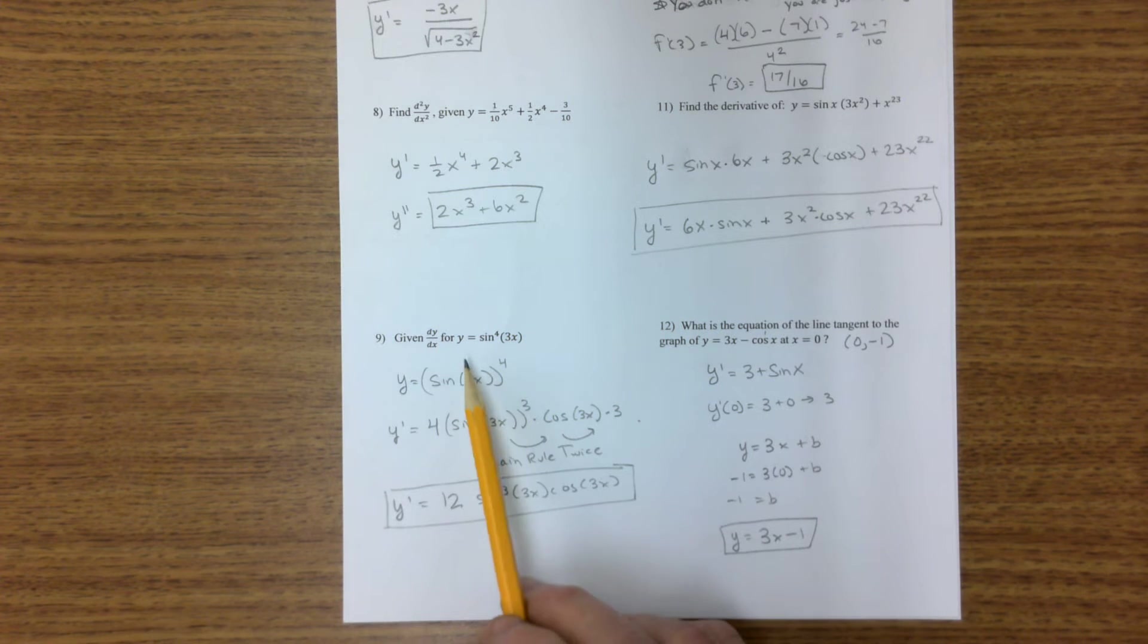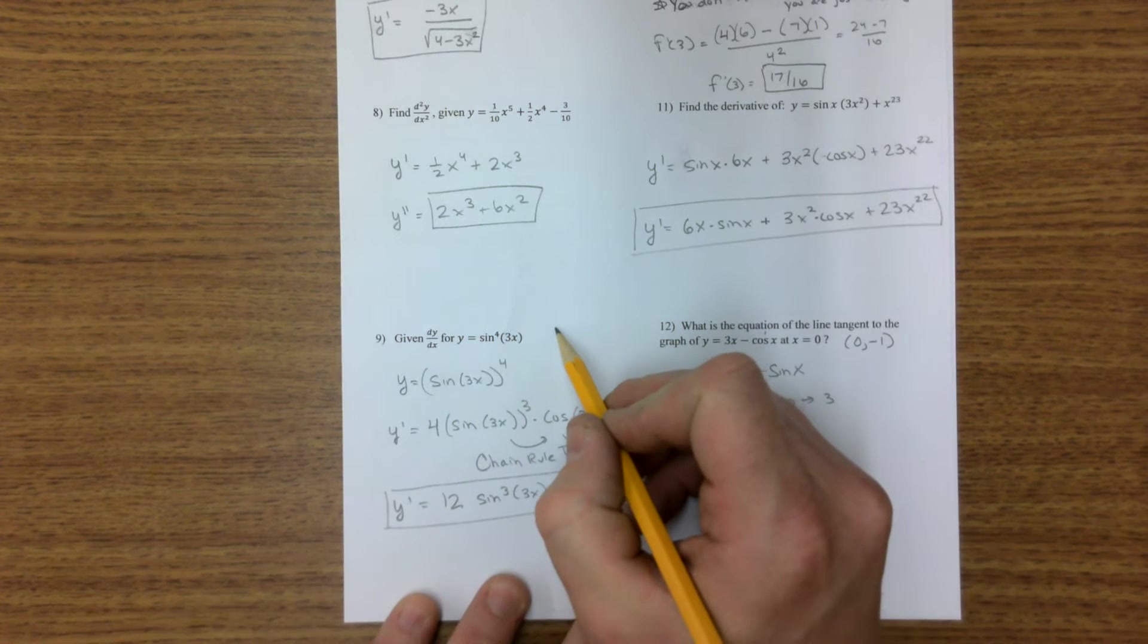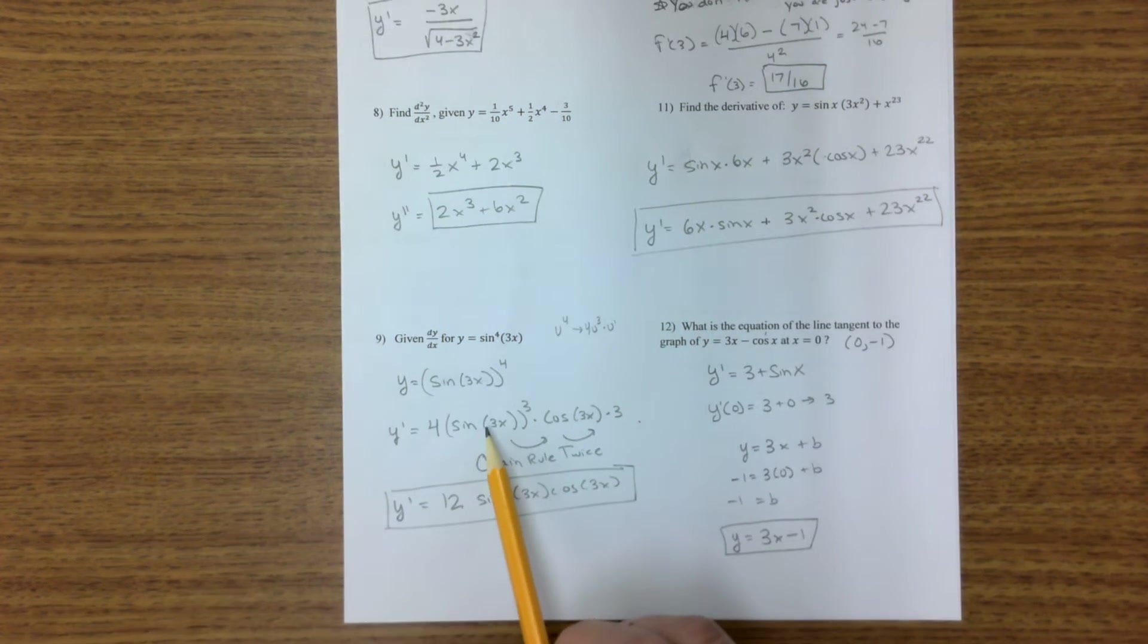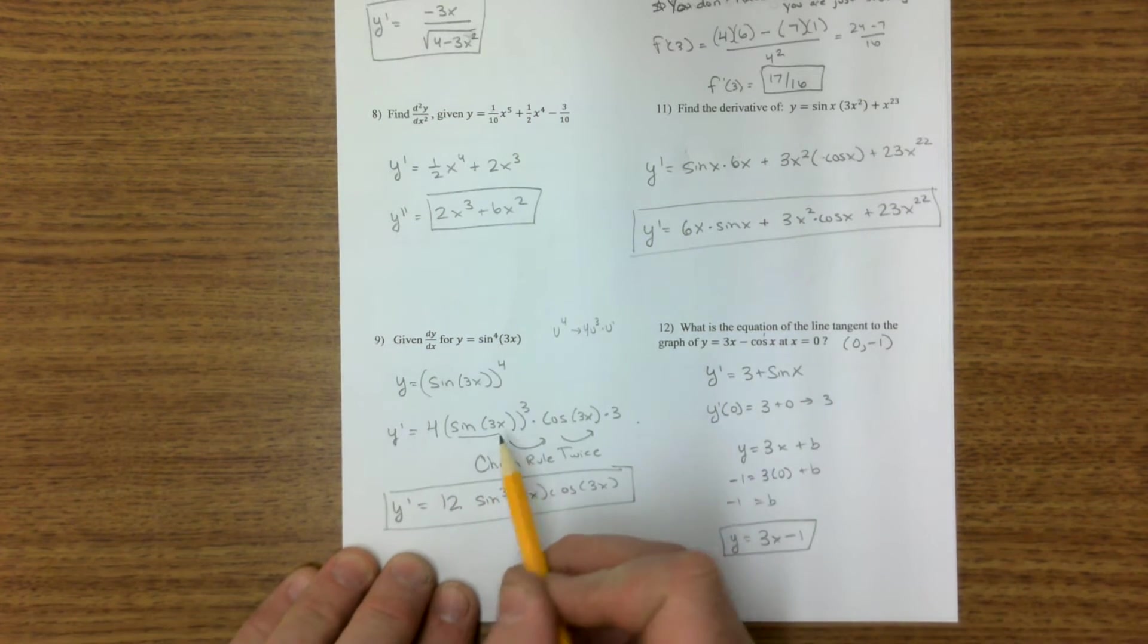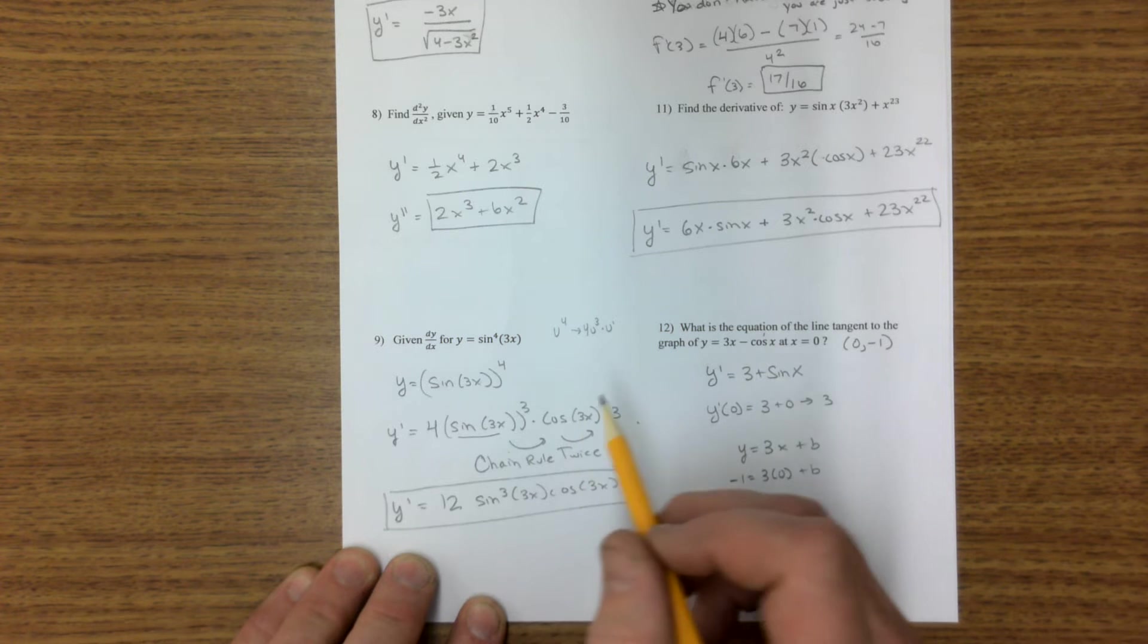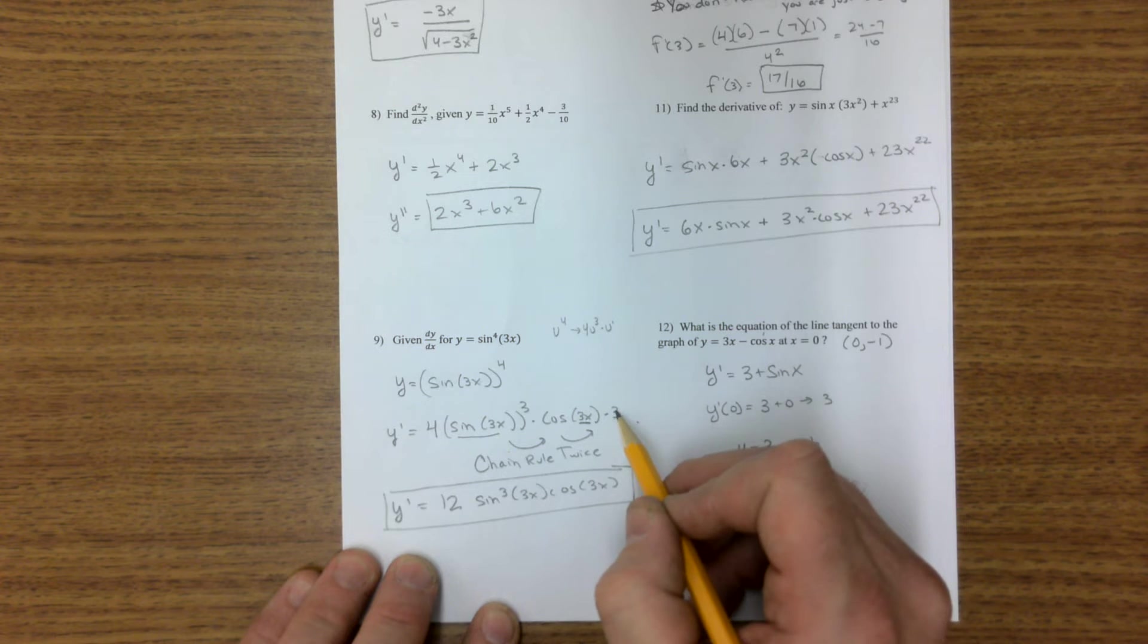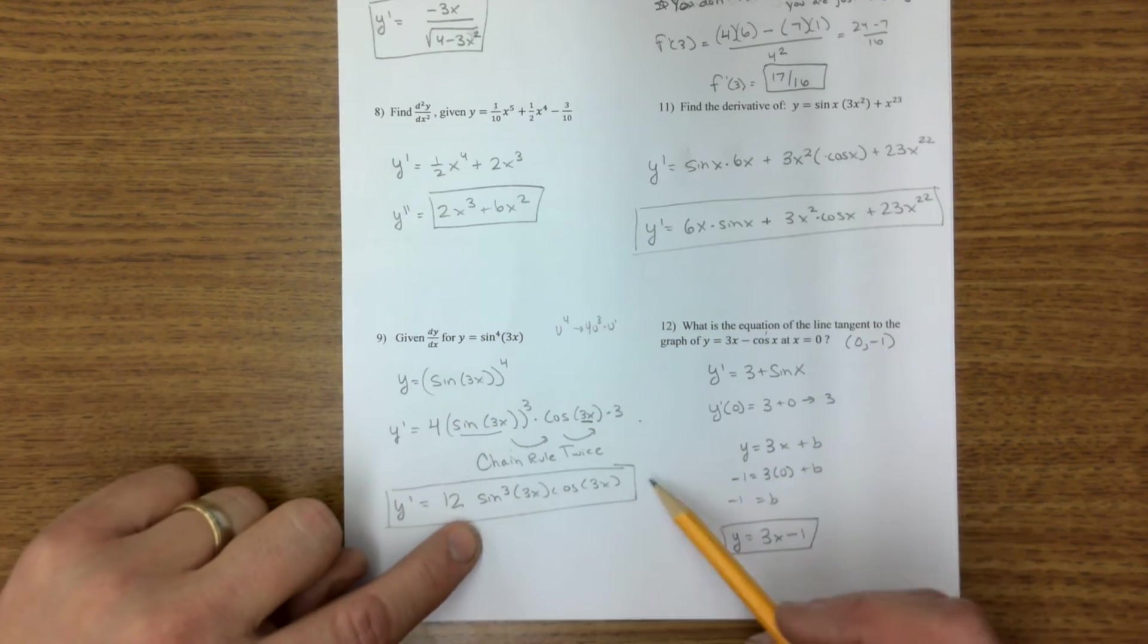On number 9, I'm going to rewrite this as this thing to the 4th power. So now, basically, what I have is u to the 4th. And if I take the derivative, that's 4u cubed times u prime. Well, there it is. 4u cubed times u prime. And the derivative of sine 3x is cosine 3x. However, now I have a similar situation here where I have 3x. And now, what's the derivative here? 3. You can stop when you get down to a constant because there's nothing else to take the derivative of. Multiply the 4 and the 3, and you have it.